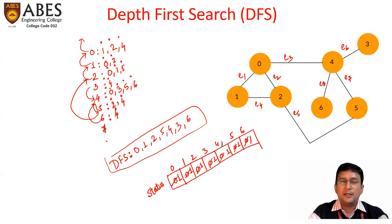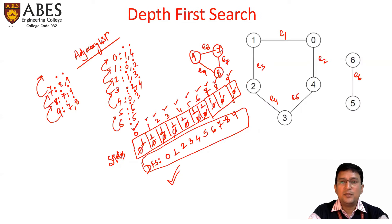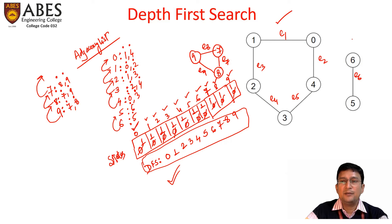This is the graph that has one connected component. And this was the graph that has three connected components. I hope before watching this video, you already have seen my previous video, wherein in the given graph we have the first connected component, the second connected component, and the third connected component.